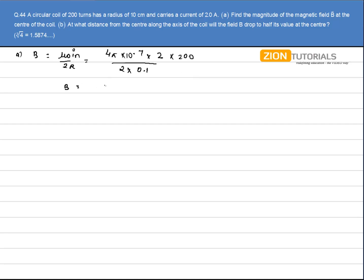I get the magnetic field as 2.512 milli tesla. This is my answer for the first part.